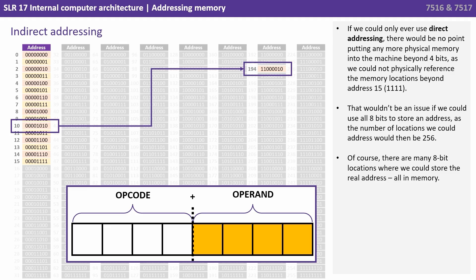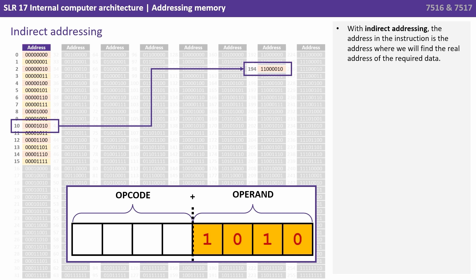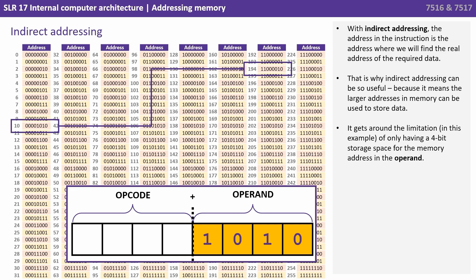Of course there are many 8-bit locations where we could store the real address, and they're all in memory. With indirect addressing the address in the instruction is the address where we'll find the real address of the required data. That's why indirect addressing can be so useful — it gets around the limitation of only having a 4-bit storage space for the memory address in the operand.